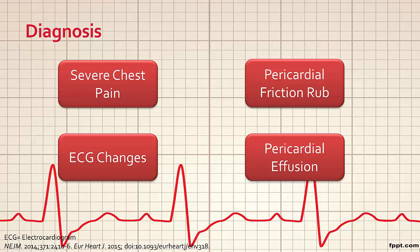The final major criteria is a pericardial effusion, and occurs in around 60% of patients with pericarditis. While these are the four major diagnostic criteria, patients may also exhibit a low-grade fever, elevated cardiac biomarkers such as troponin, elevated markers of inflammation such as a high white blood cell count, or some patients may even be asymptomatic.